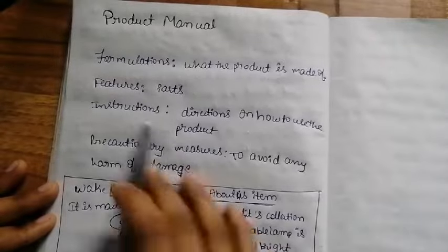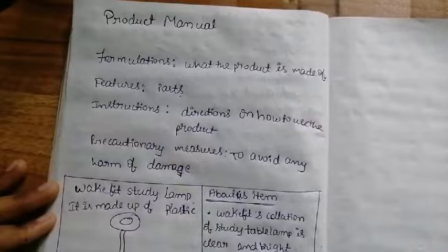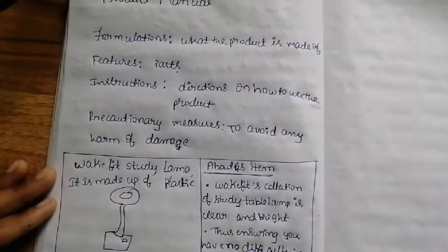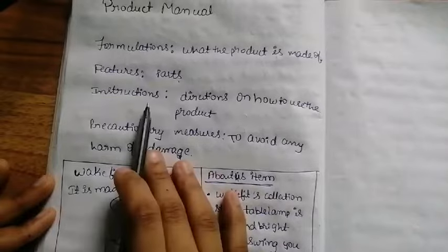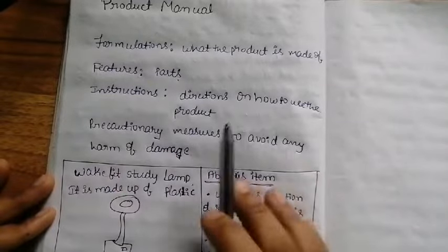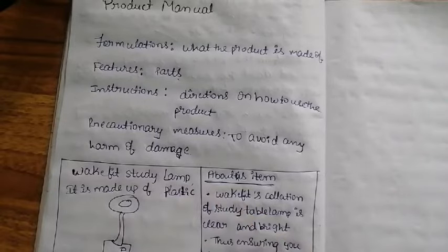Next, features - you mention the parts of the product. Like color and other details. Then instructions and directions on how to use the product. Then precautions - measures to avoid any harm or damage.